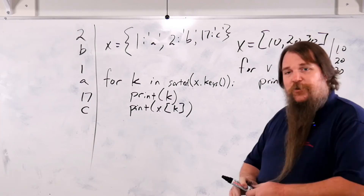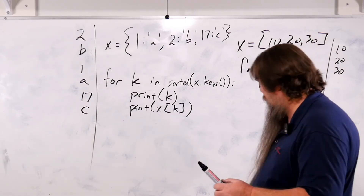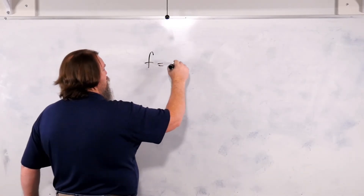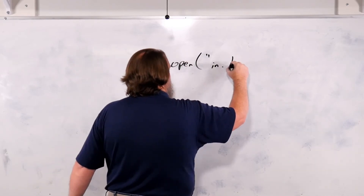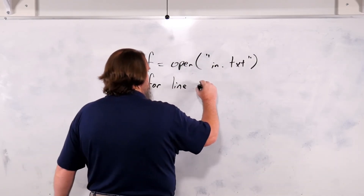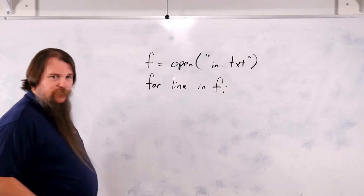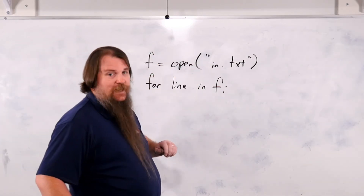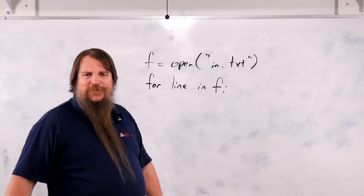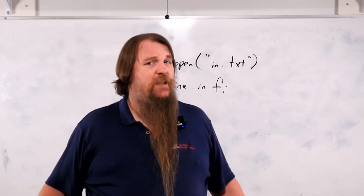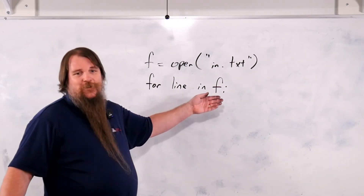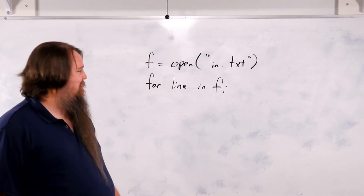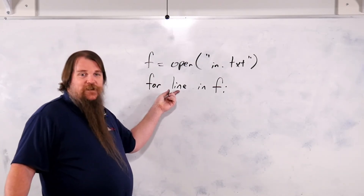Alright, anything else you can iterate over? Well yes, here's something you might not expect. `f = open('in.txt')`, `for line in f` — we've just opened a file and we're now iterating over it as if it's a collection. What do you think are the elements? The way Python does this is that each one will be a line of the file.